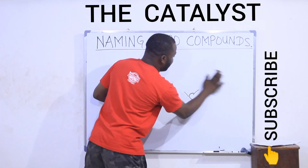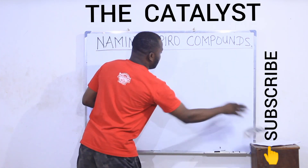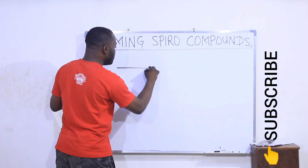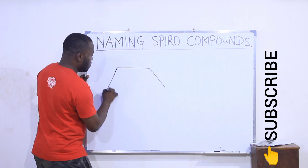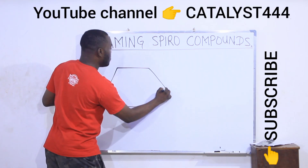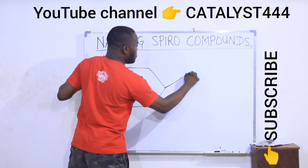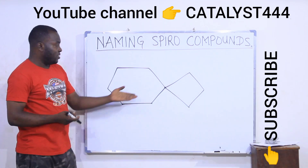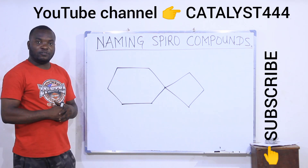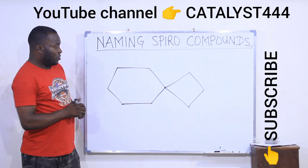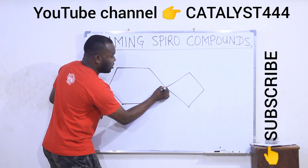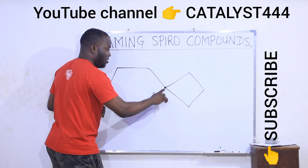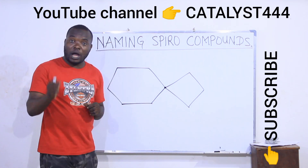We'll start with the first example. This on the board is a spiro compound. The carbon that connects the two cyclic rings — that is this one here — is called the spiro carbon.